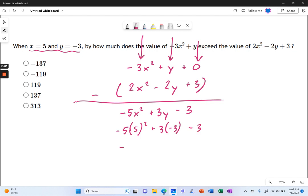Well, this is going to become negative 5 times 25 minus 9. That's 3 times negative 3 minus 3. And this becomes negative 125 minus 9 minus 3. Which, doing a little mental math here, is negative 137. So, there's our answer.